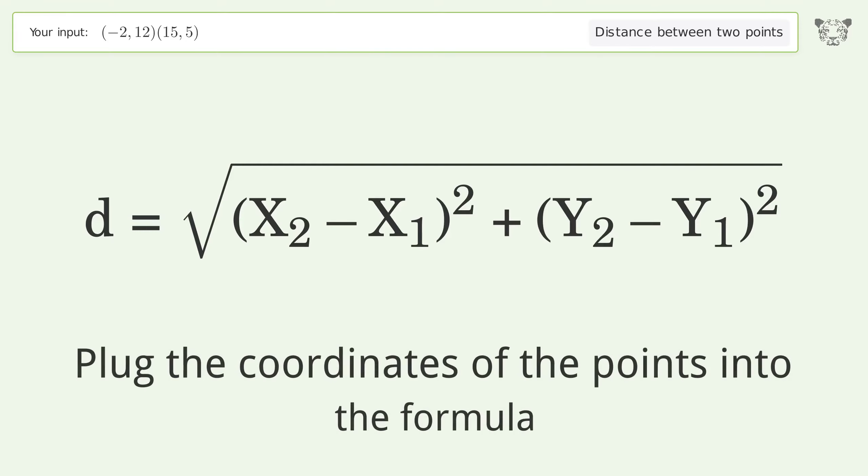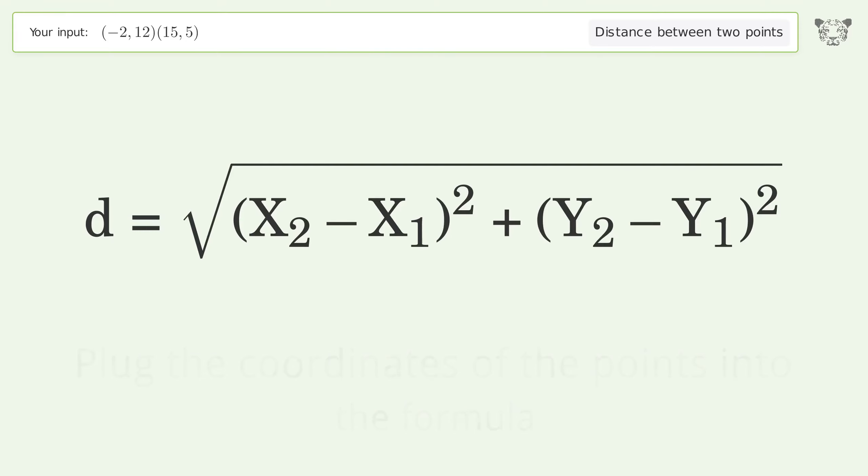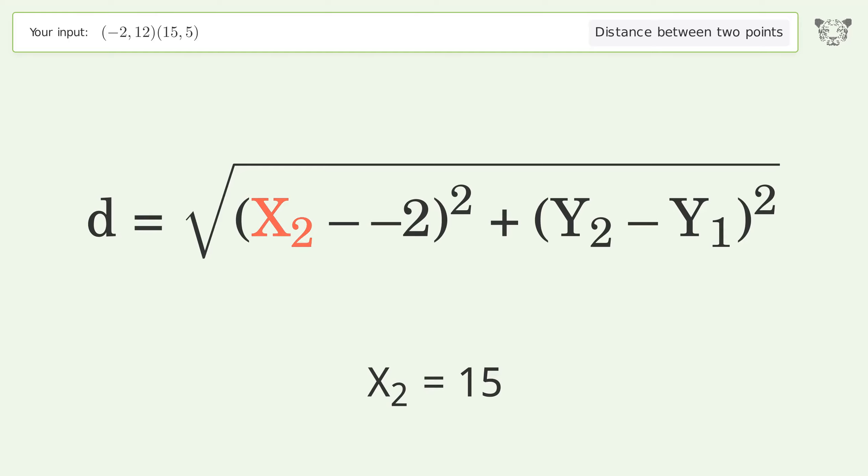Plug the coordinates of the points into the formula: x1 equals negative 2, x2 equals 15, y1 equals 12, y2 equals 5.